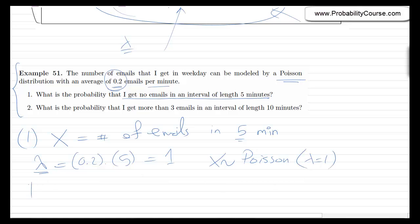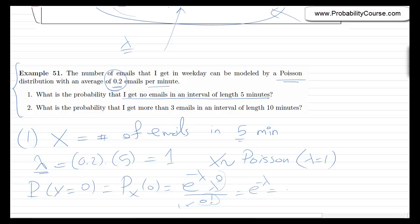We want P(x = 0) = e^(−lambda) · lambda^0 / 0!. Since 0! = 1 and lambda^0 = 1, this simplifies to e^(−1) = 1/e.